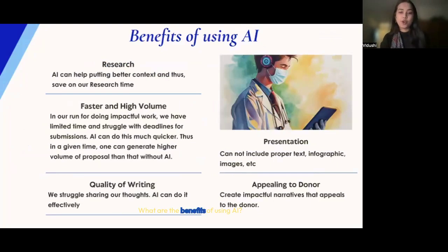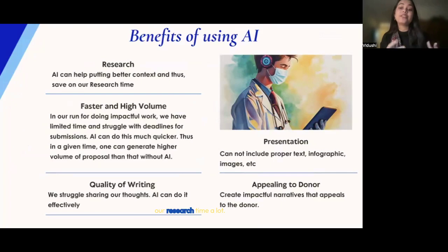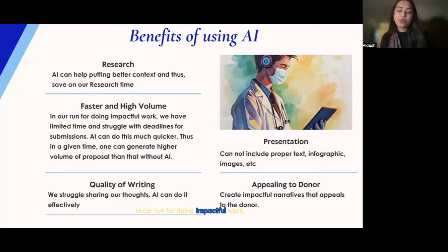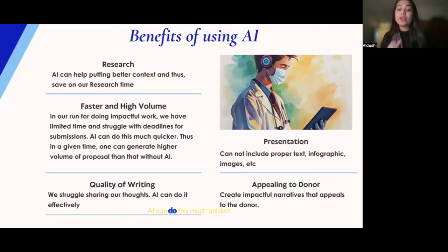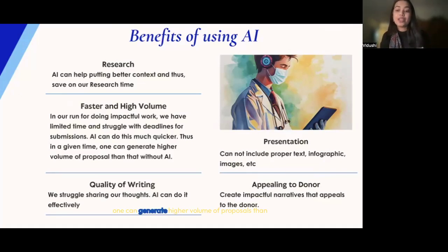What are the benefits of using AI? First is research. AI can help provide better context and thus save a lot of research time. Second is faster and high volume output. In our run for doing impactful work, we have limited time and struggle with deadlines for submissions. AI can do this much quicker, so in a given time one can generate a higher volume of proposals than without the use of AI.